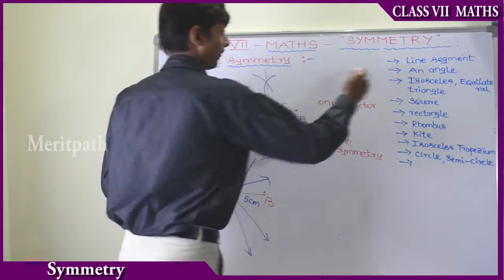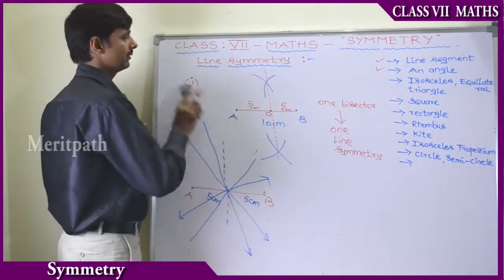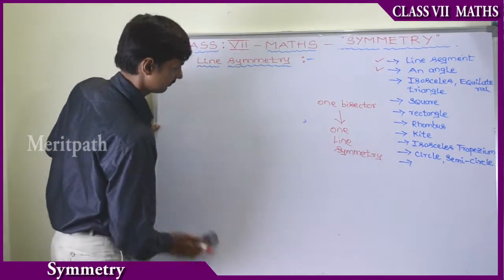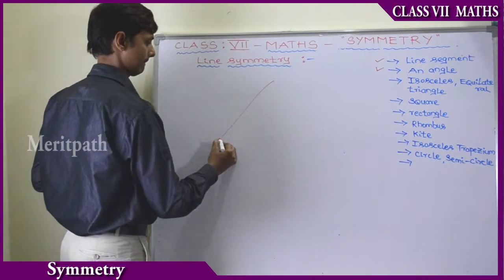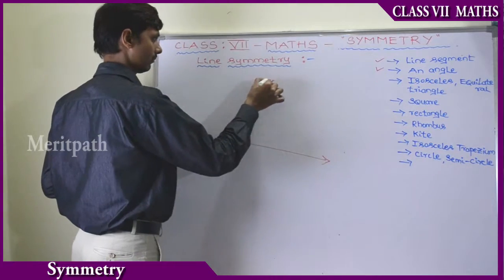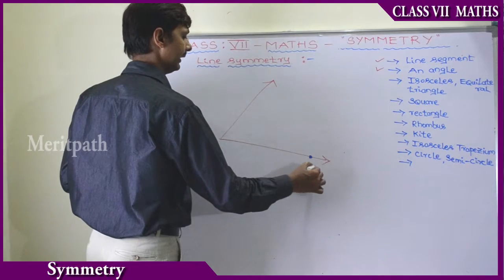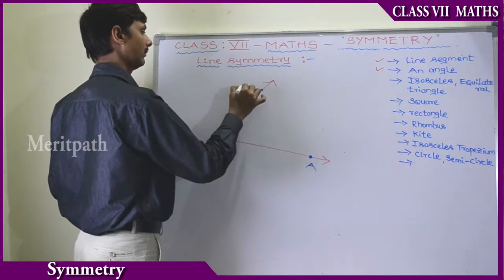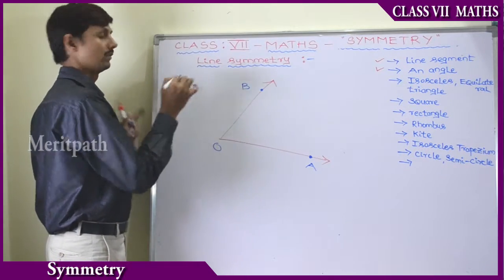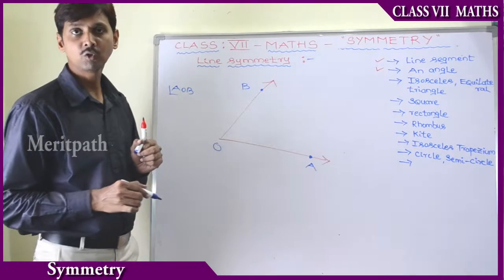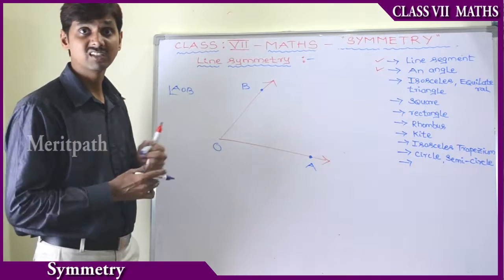Now let's take an angle. We consider it an angle and name it as AOB. The AOB is one of the angles. We know how to construct an angle bisector - we have learnt this in constructions.